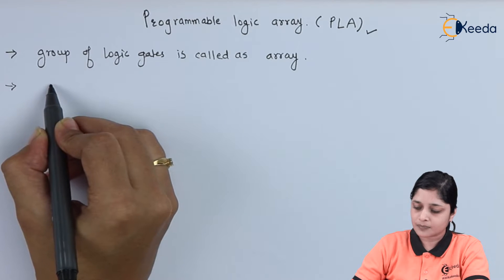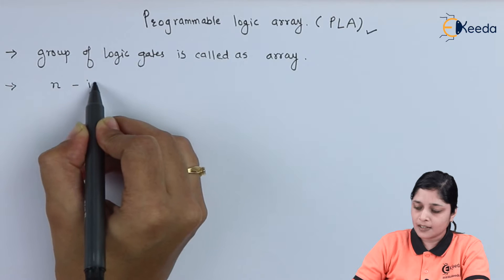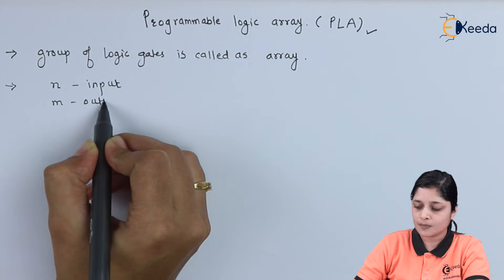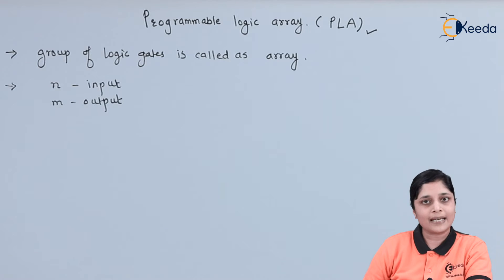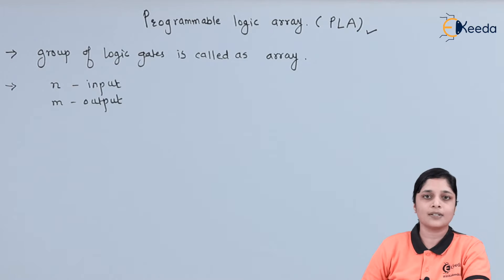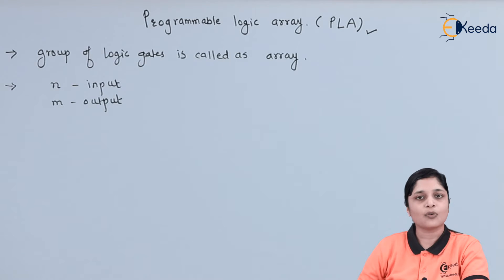it has N inputs and M outputs. We can realize the circuit having N number of inputs and the circuit having M number of outputs.